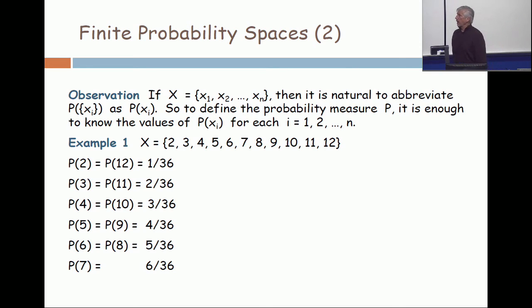If you add all those numbers up - 1, 2, 3, 4, 5 is 15, but you're doing that twice, so 15 plus 15 is 30, plus 6 is 36. So all the probabilities sum to 1. If you take your elementary events, the singletons in a finite set, and assign them non-negative numbers which sum to 1, you have defined a finite probability space. Is the notion clear?